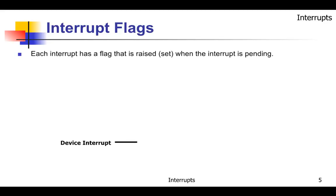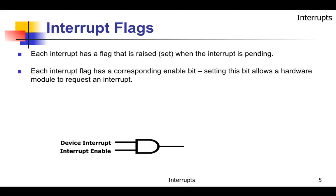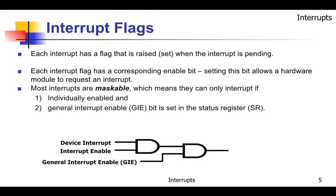What are interrupt flags? Each interrupt has a flag that is raised or set when the interrupt is pending. Each interrupt flag has a corresponding enable bit — setting this bit allows the hardware module to request an interrupt. You have to have both the device interrupt triggered and the interrupt enabled for the request to go through. There's also a global interrupt enable which will mask all maskable interrupts, and it must be set for any maskable interrupt to actually interrupt the processor.